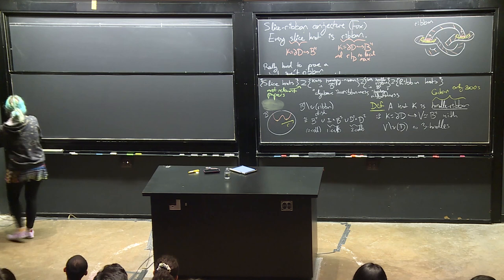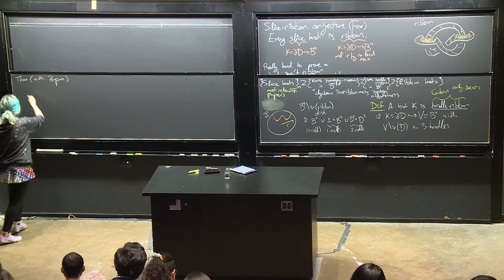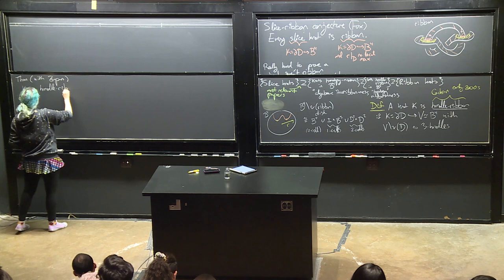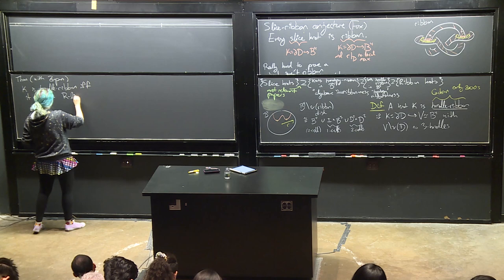Here's what we actually proved — the better theorem: a knot K is handle ribbon if and only if it admits an R-link derivative.